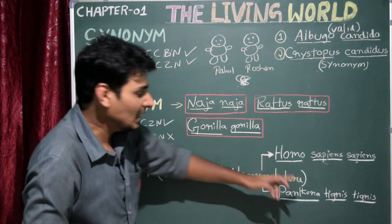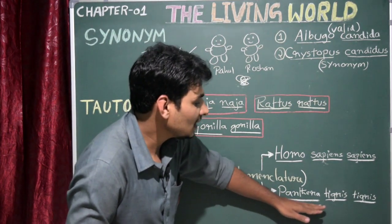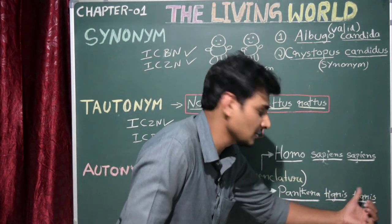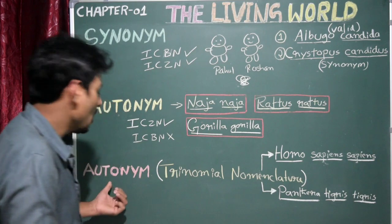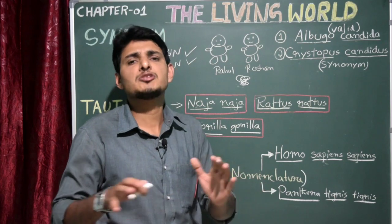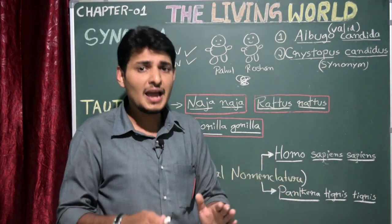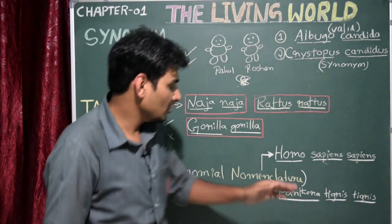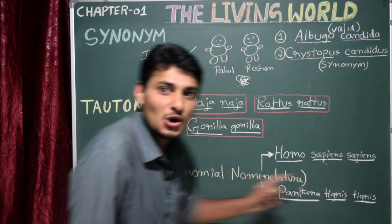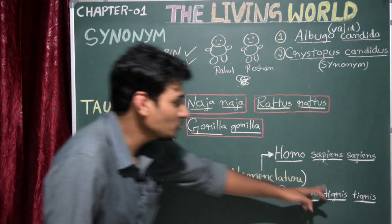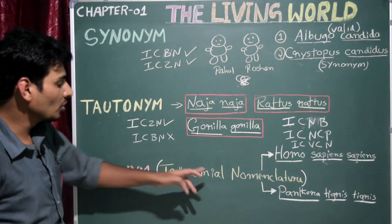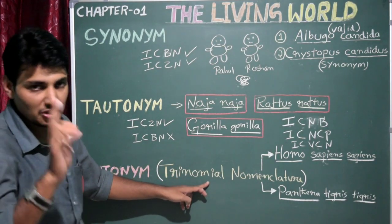Another example: Panthera tigris tigris — the species is tigris and the subspecies is also tigris, so this is again an autonym. There are nine different species of tigers; three are already extinct and six remain. For example, Panthera tigris sumatrae — here tigris and sumatrae are different, so it is not an autonym. Autonym is applicable only in trinomial nomenclature.